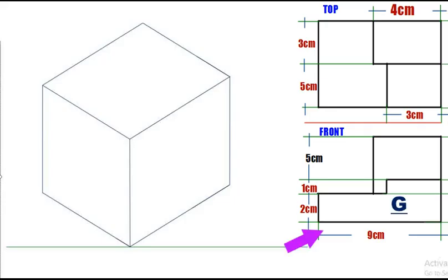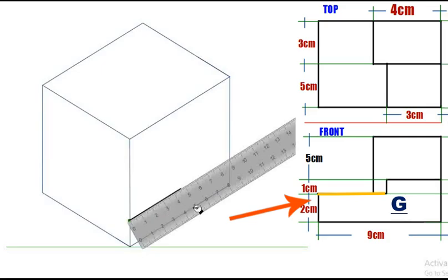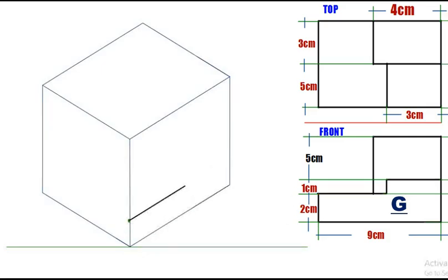Measure 2 centimeters and mark a point. Then draw a 5 centimeters parallel line along the x-axis. After the 5 centimeters mark, draw a 1 centimeter vertical line parallel to the y-axis, followed by a 3 centimeters parallel line along the x-axis.